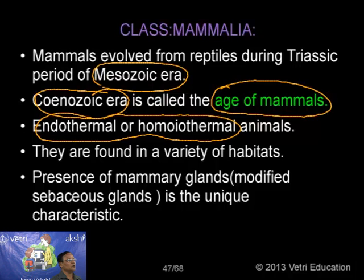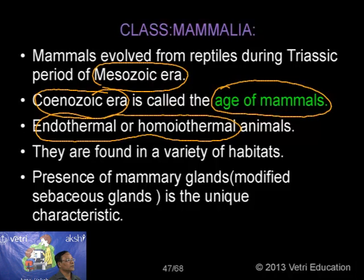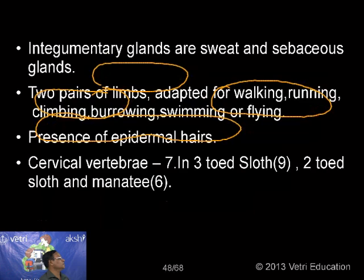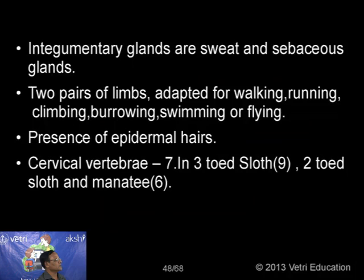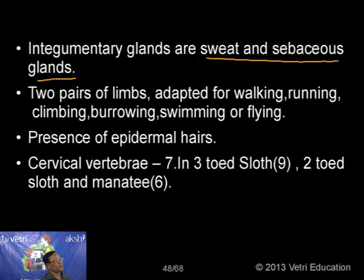What is the nature of the mammary gland? In all mammals we have skin glands called integumentary glands — different types such as sweat glands and sebaceous glands. The mammary glands are modified sebaceous glands, coming into the category of merocrine. Sebaceous glands are examples of holocrine glands. The sweat glands are examples of apocrine glands. The mammary glands are examples of merocrine glands. We have different types of glands based on the mode of secretion.